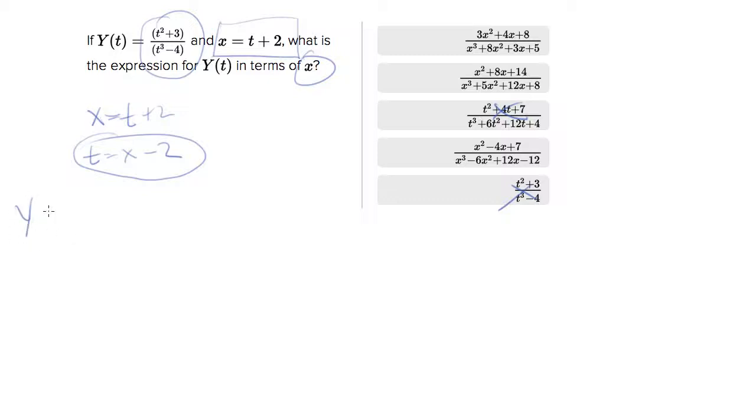So let's go ahead and do that. Y(t) is equal to t squared, which is (x minus 2) squared, plus 3 over t cubed, which is (x minus 2) cubed minus 4.